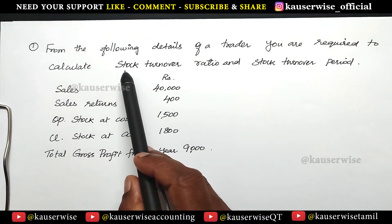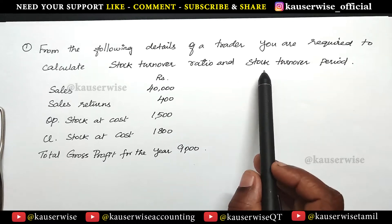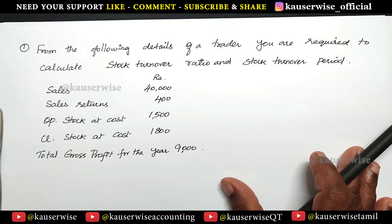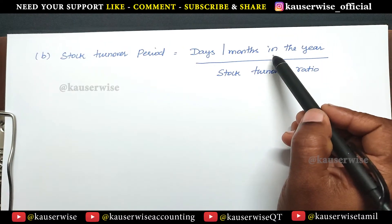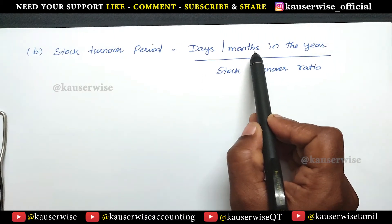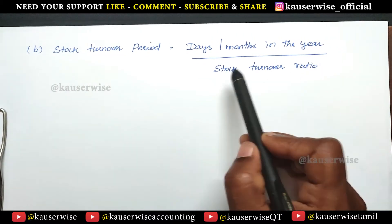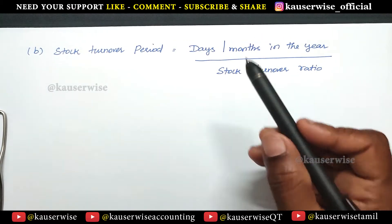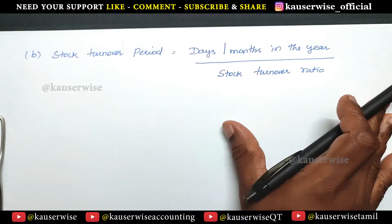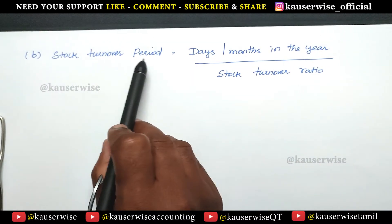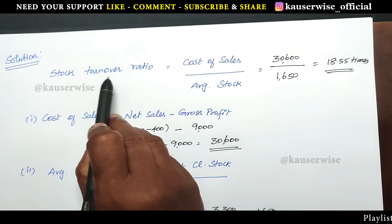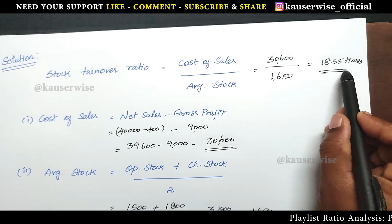We have calculated stock turnover ratio. The next calculation is stock turnover period. This is the formula to find out stock turnover period: days or months in the year divided by stock turnover ratio. In the previous calculation we have found stock turnover ratio. Now see the calculation for stock turnover period — the stock turnover ratio is 18.55 times.